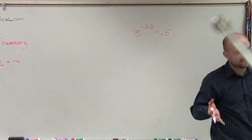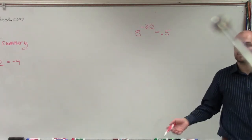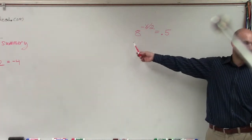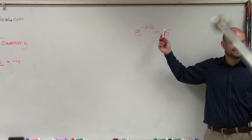So what I want to do is make sure I can get the same base on both sides. But we come into an issue because rewriting 8 and 0.5 with the same base is just not going to work.